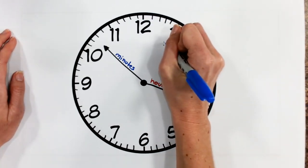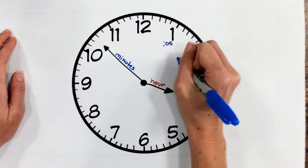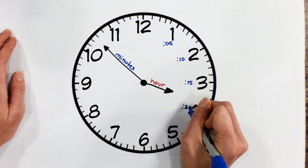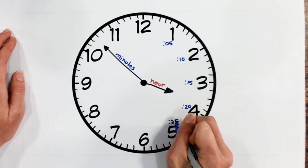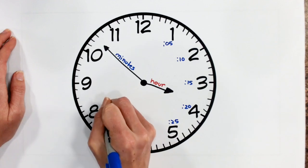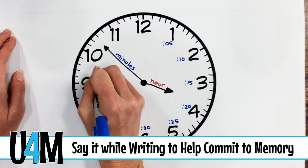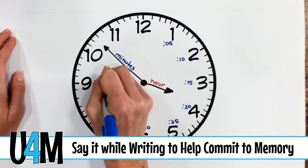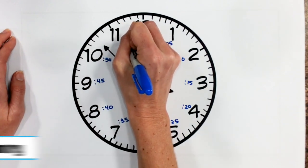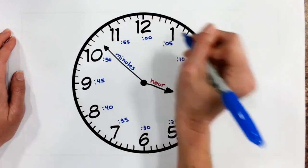This one here again is where our five minutes land. And we have 10, 15, 20, 25, 30, 35, 40, 45, 50, 55. It helps for students when they write these out to say them at the same time. Then they'll get really used to knowing where they are on our clock.